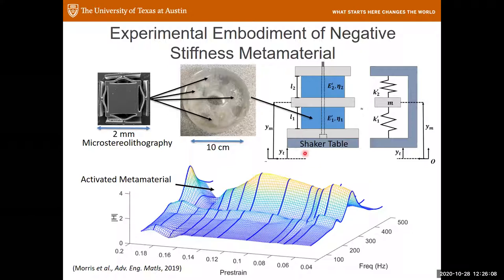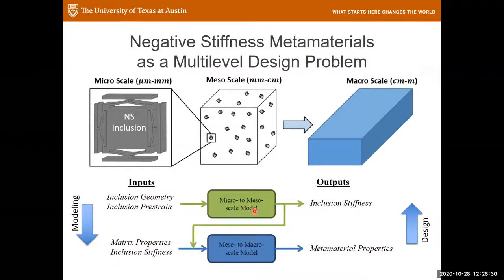We achieved these results on the very first prototype because we followed a systematic design procedure. We treat this material as a two-level multi-scale modeling problem. At the lower level, we design the inclusions — examining geometric properties and their effective stiffness. At the higher level, we design the matrix-inclusion composite, looking at matrix properties and pre-strain to get the actual metamaterial properties. We use a sampling approach, where each sample point represents a combination of geometric properties whose performance we evaluate through a composite model.